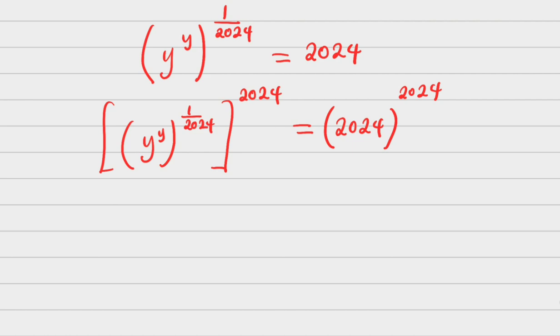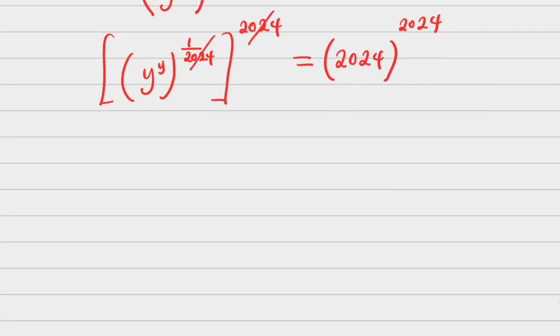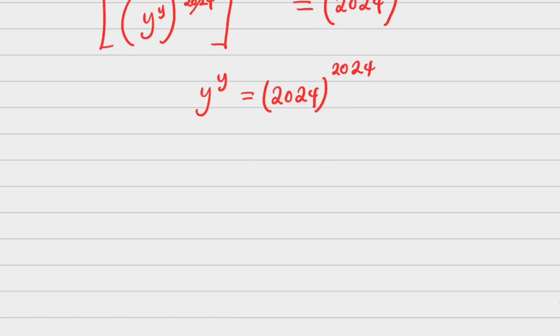Now check it out. The exponents multiply and cancel out, so what I have now is y^y = 2024^2024.